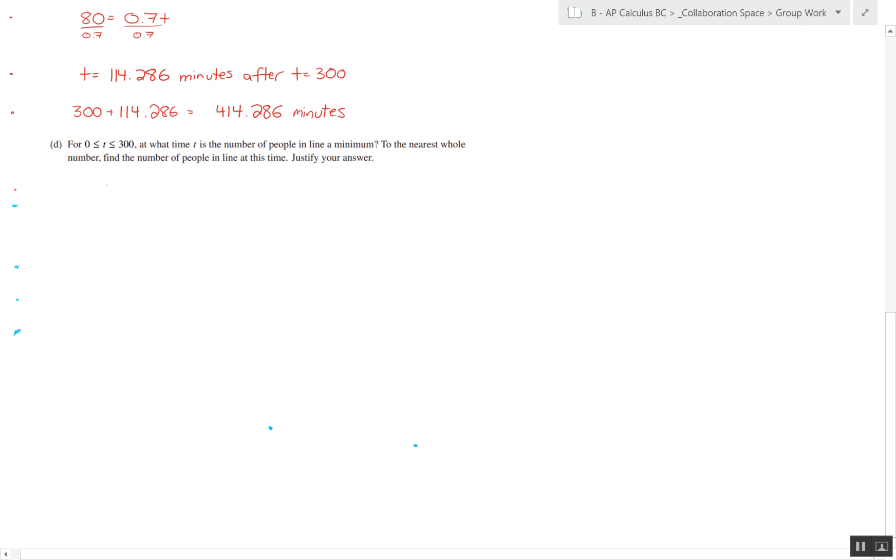Part D asks us at what time t is the number of people in line a minimum, and to justify our answer. We want to know when f of t right here is at a minimum. If we just graph it out, we find that our minimum is at 33.014. However, we can't end there saying that's the minimum. We also have to test the other candidates, which will be the extremums.